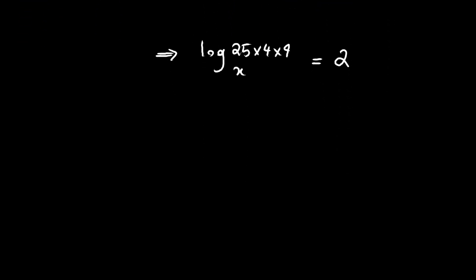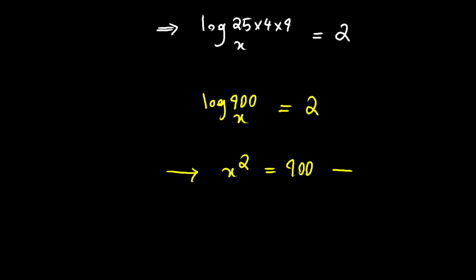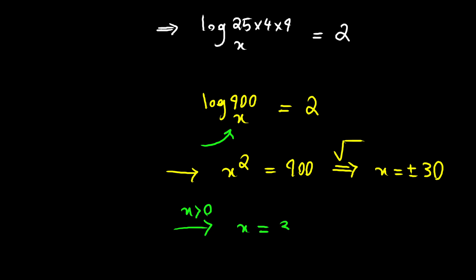Now 25 times 4 times 9 equals 900, so we have log of 900 with base x equals 2, which means x squared equals 900. Taking the square root of both sides gives x equals positive or negative 30. Since x appears as the base of a logarithm, x must be positive, so x equals 30.